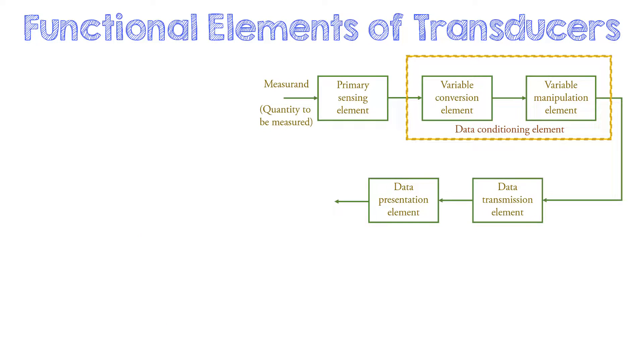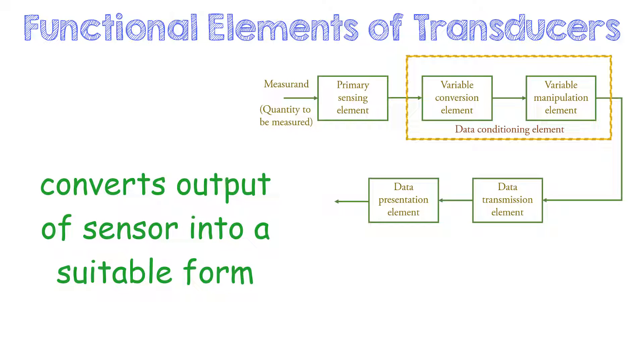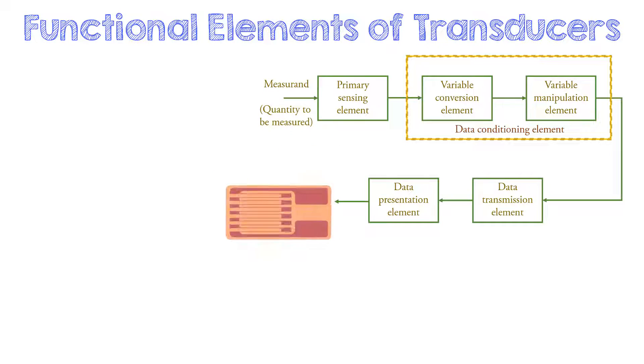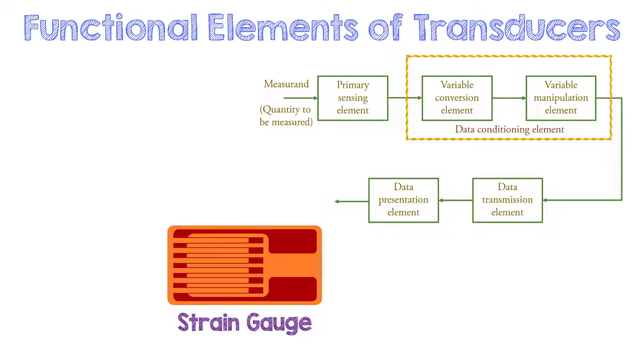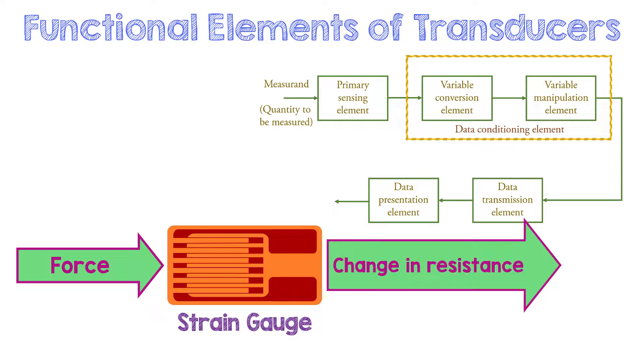The next block is variable conversion element. This block converts the output of primary sensing element into a suitable form without changing the information about the physical quantity under measurement. Taking the previous example of strain gauge, we know that strain gauge gives the force applied as a change in resistance.